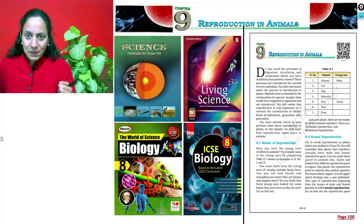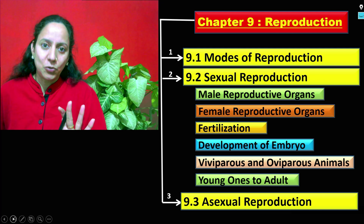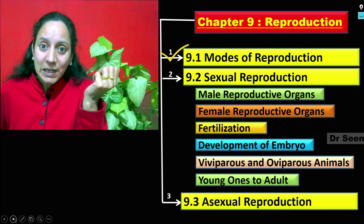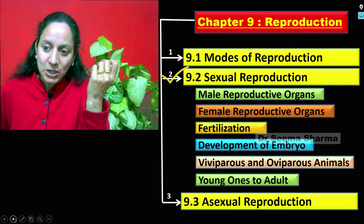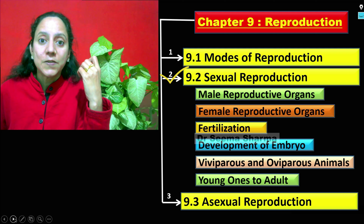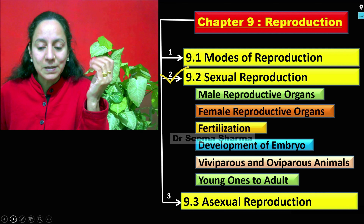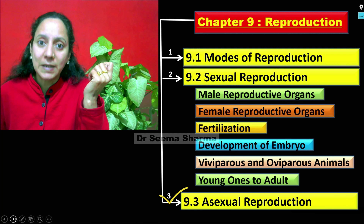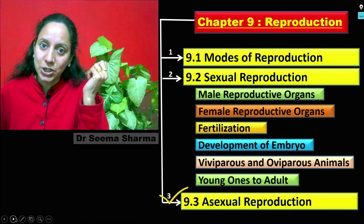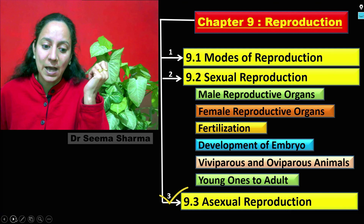Chapter 9, Reproduction in Animals, is basically divisible into three parts. Segment 9.1 deals with the mode of reproduction. In 9.2, you will learn about sexual reproduction, with focus totally on sexual reproduction in human beings. The last segment, 9.3, covers asexual reproduction in animals. Before proceeding, let's look at the learning objectives of this video.